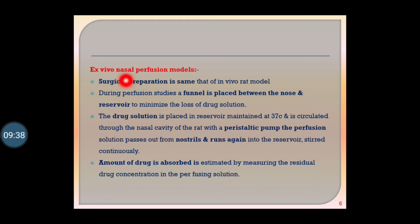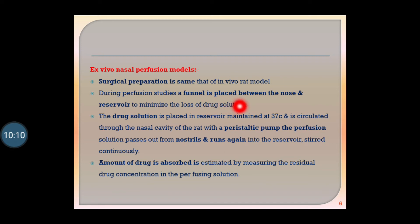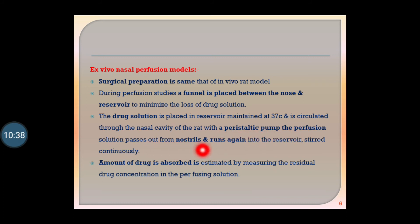For the ex vivo nasal perfusion model, the surgical preparation is the same as for the in vivo rat model. During perfusion study, a funnel is placed between the nose and reservoir to minimize loss of drug solution. The drug solution is placed in a reservoir maintained at 37 degrees Celsius and circulated through the nasal cavity of the rat using a peristaltic pump. The perfusion solution passes out from the nostril and runs back into the reservoir while being stirred continuously.